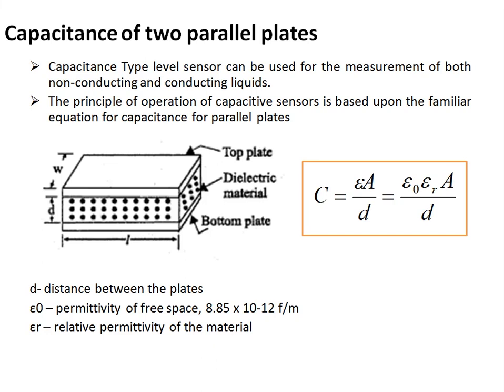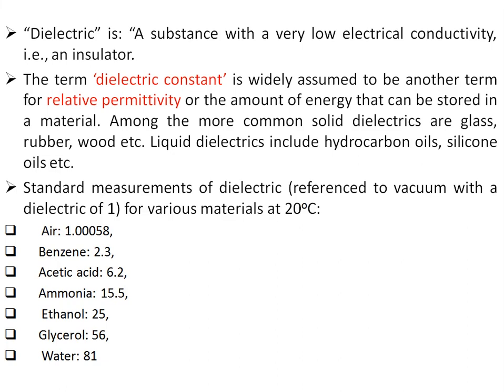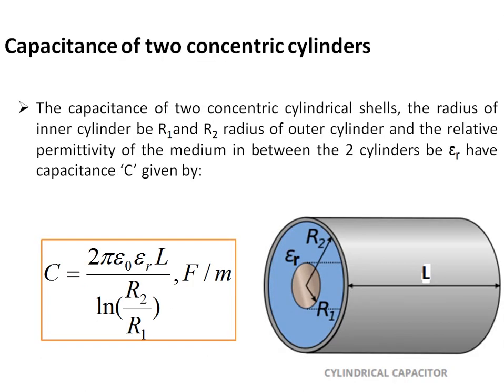For non-conducting liquids, the varying parameter is the dielectric constant; for conducting liquids, it is mainly the distance between the plates. A dielectric material is a substance with very low electrical conductivity — essentially an insulator. Common solid dielectrics include glass, rubber, and wood; liquid dielectrics include hydrocarbon oils and silicone oils. The dielectric constant of various materials at 20°C includes: fiber (~1.0), benzene (2.31), glycerol (51), and water (81).